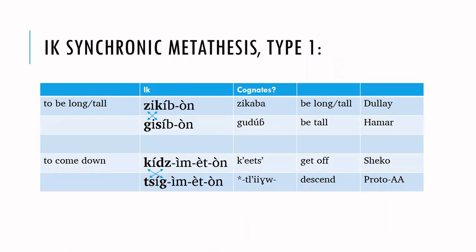Moving on now to synchronic metathesis in Eek, Type 1. The Eek verb 'to be long or tall' is zikibon. But when I was living in the Eek area and studying the language, I occasionally heard this verb pronounced as gisibon. This was my very first clue years ago of metathesis in the Eek language. On the right I have possible cognates for both forms — for example, zikaba in Dulai, and gudup in Hamar. Semantically, all these forms are quite close.